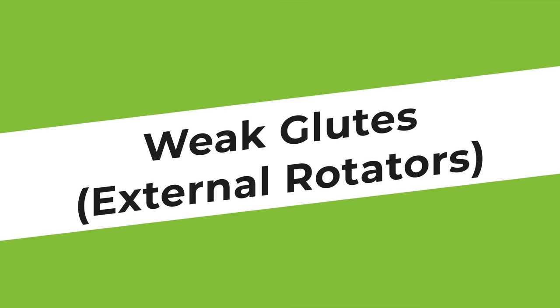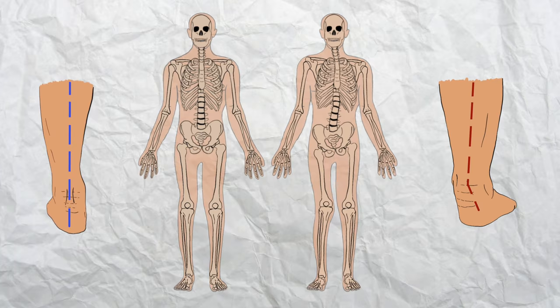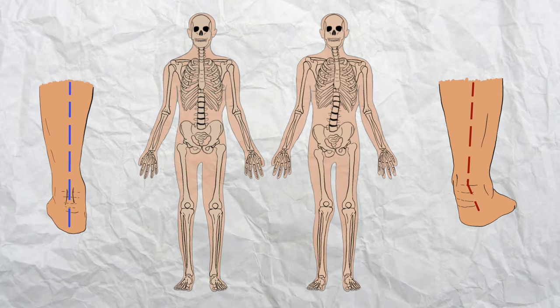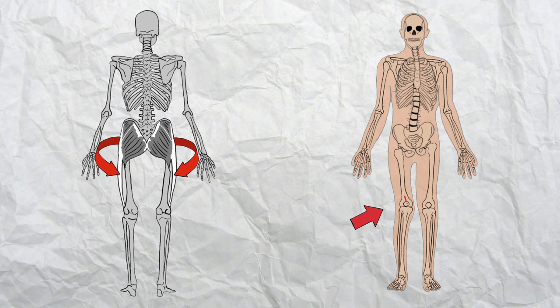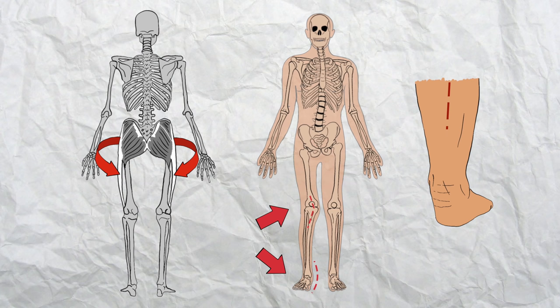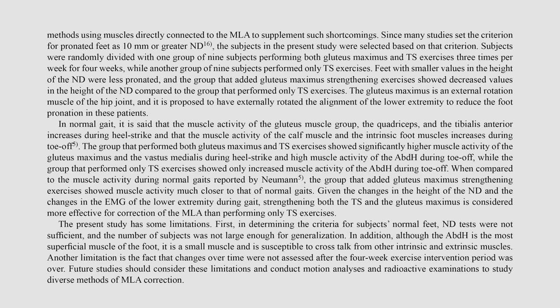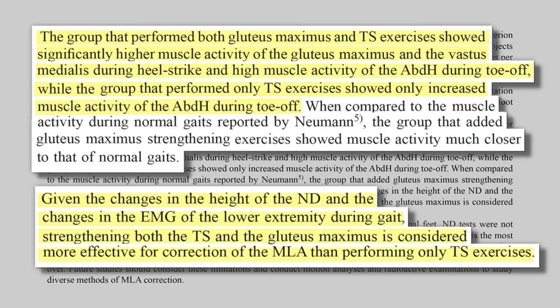The fourth and final factor is weak glutes or external rotators. The body is an integrated system, so dysfunction in one area has consequences for other areas along the kinetic chain. Because the gluteal muscles are external rotators of the upper limbs, when the glutes don't function properly the thigh bone rotates internally, which causes the knee to dive inwards, which then sends the foot into overpronation and collapses the arch. Studies have found that gluteal strengthening exercises in combination with foot strengthening exercises are far better at correcting a shallow medial longitudinal arch than foot strengthening exercises alone. Therefore, it is absolutely critical to include glute strengthening exercises in your regime when trying to fix flat feet.